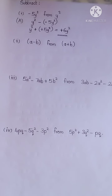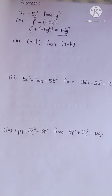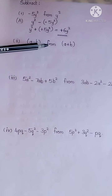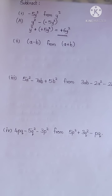Let us see the second question: subtract a minus b from a plus b. So you should write whatever comes after 'from' first, then the subtraction sign, and then the second expression. Let us write the algebraic expression for this.